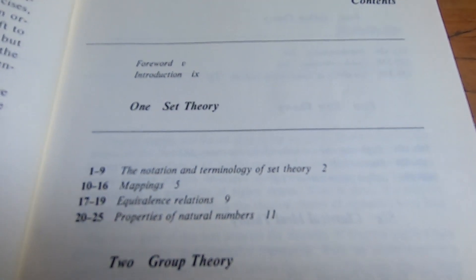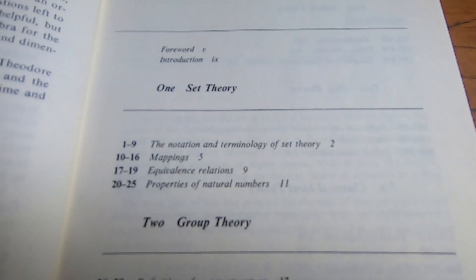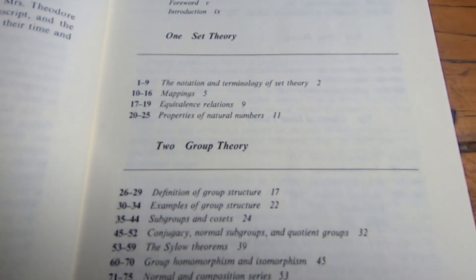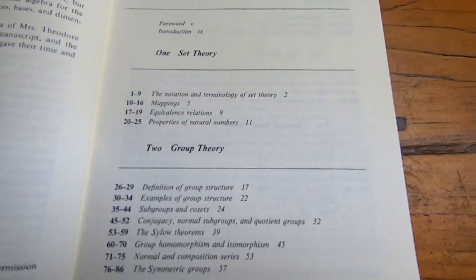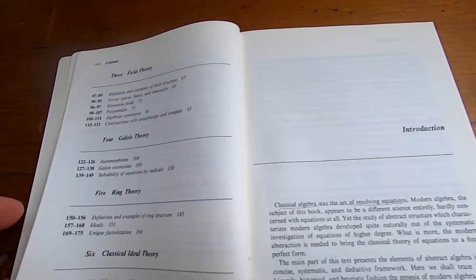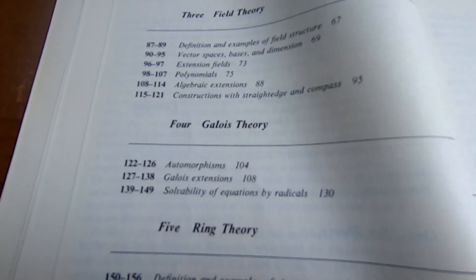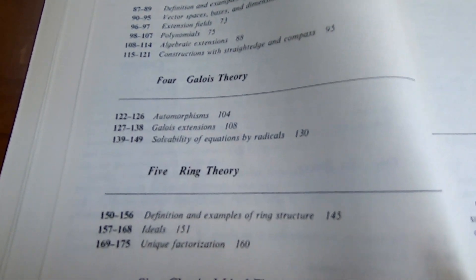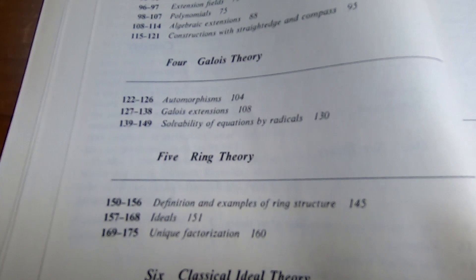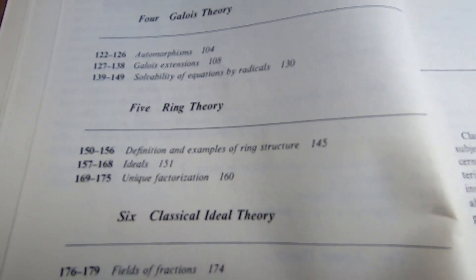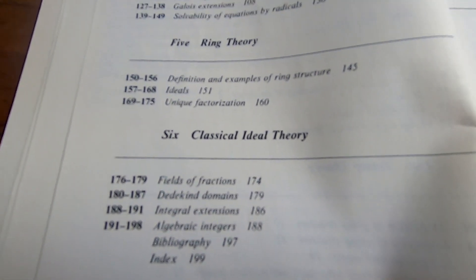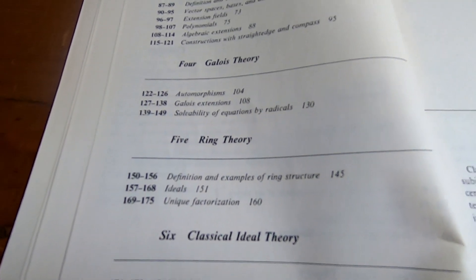So this is the table of contents. It starts off with set theory, then it goes on to group theory. Let's turn the page. Then it jumps to field theory, then Galois theory, and then some more specialized ring theory, interesting order of topics, and then classical ideal theory. Let's take a look at the actual book now.